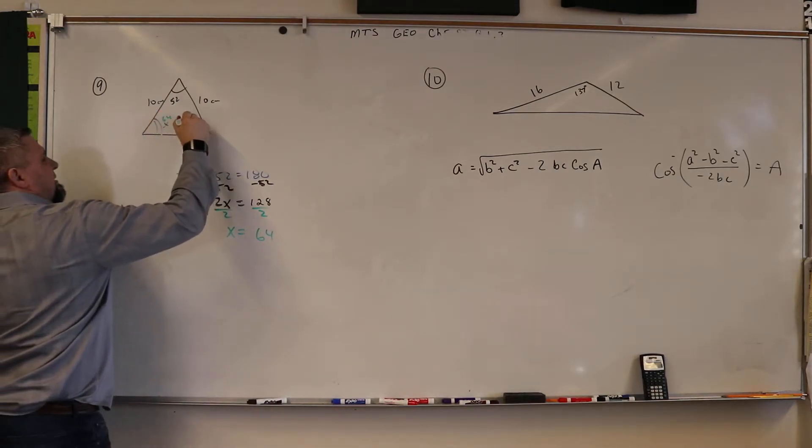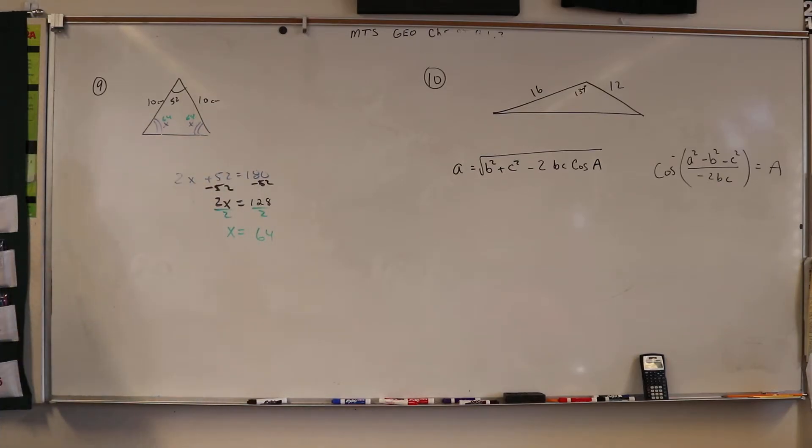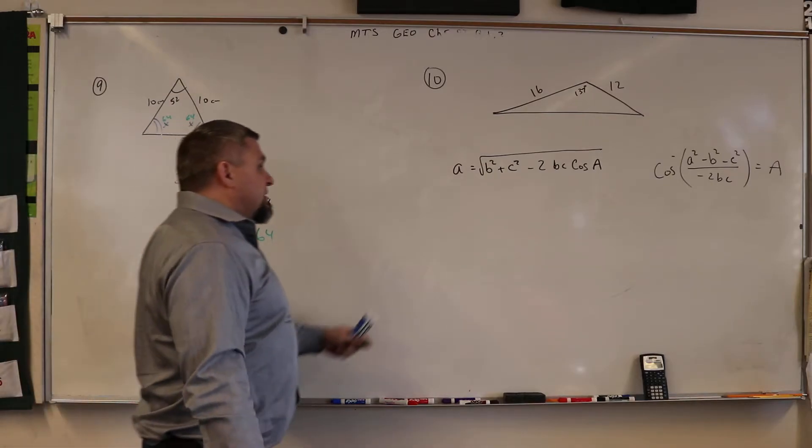And the reason why we went through all that trouble to find those angles is because now we can use law of sines instead of using the law of cosines. You can see the law of cosines is quite confusing, right?